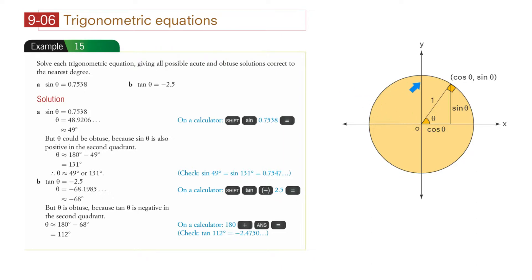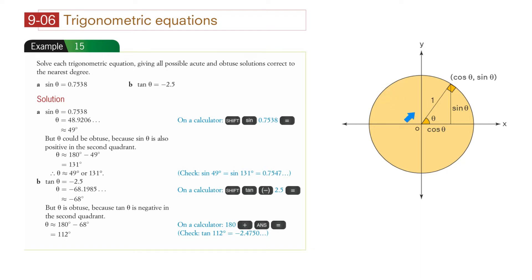Now, 0.7538 measured on the y-axis (because that's sine) also hits the unit circle at another point. We find that angle by doing 180 minus theta. Since sine theta is also positive in the second quadrant — remember 'all stations to central' — 180 minus 49 gives us 131 degrees. So the answers are 49 degrees and 131 degrees.